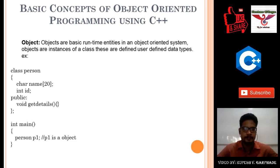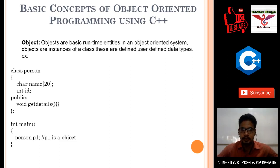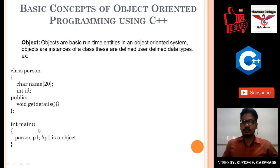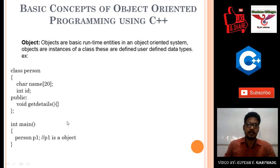Can you identify the parts of the person class? 'get details' is a function. 'name' and 'id' are data. 'Person' is the name of the class — not a function. 'p1' is the name of the object. 'main' is also a function, and 'get details' is also a function.